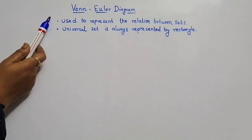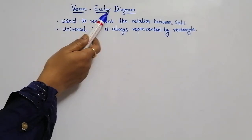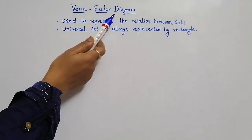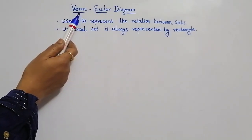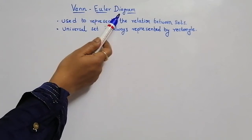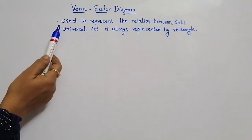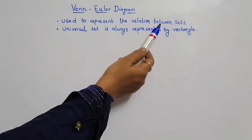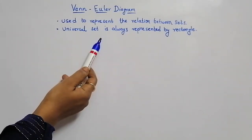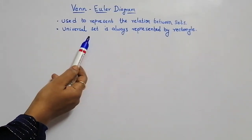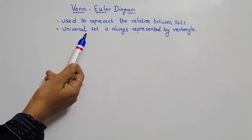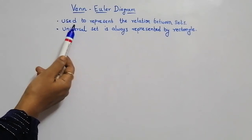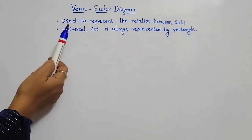Hi students, in this video I am going to explain you about Venn-Euler Diagram, or otherwise we can simply call it a Venn Diagram. These Venn Diagrams are used to represent the relation between sets — union, intersection, subtraction, disjoint — everything can be represented using this Venn Diagram.